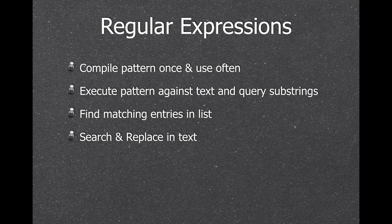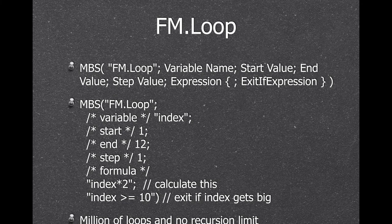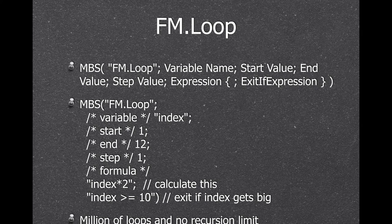The MBS plugin allows you to use regular expressions. You can compile a pattern once and use it often. You can run a pattern against text, query the substrings you found, find matching items in a list, and search in pasted text based on the patterns. Recently we added new loop functions for our plugin. You can run a for loop within a function call — you provide the variable name to count up or downwards, the start and end value, as well as the step. We can count from the start value to the end value and for each iteration run the given expression. As long as the exit expression is not true we continue the loop, so you can run a million loops with no recursion limit.